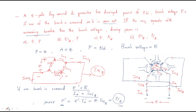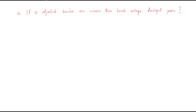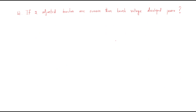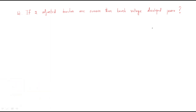In the last session we discussed the first problem: if the machine is operating with one brush removed, what is the brush voltage and the developed power? The second question is if two adjacent brushes are removed, what is the brush voltage and developed power? To understand this, assume we have brushes arranged in a circle — one positive and one negative, alternating.